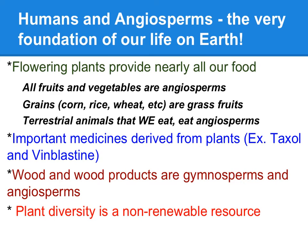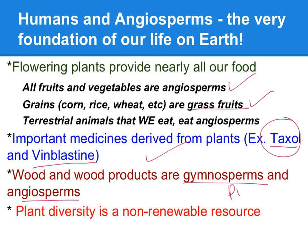Humans and angiosperms — they are the foundation of life on Earth. They produce nearly all of our food: the great grains — corn, rice, wheat — are all in the grass family and are angiosperms. And if you eat animals, those animals are eating angiosperms. Some of our important medicines are derived from plants, like Taxol and Vinblastine, which are anti-cancer drugs from a yew tree, and another from periwinkle. Wood and wood products come from gymnosperms and angiosperms. And although plants are a renewable resource, plant diversity is a non-renewable resource — if we lose plant diversity, that's not such a good thing. I hope this has been helpful and I will see you guys in class.